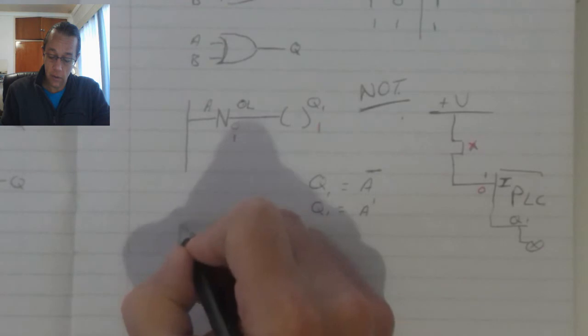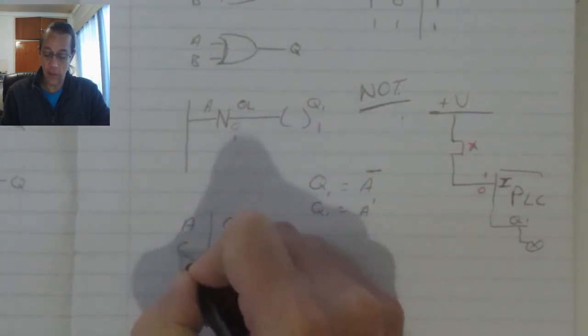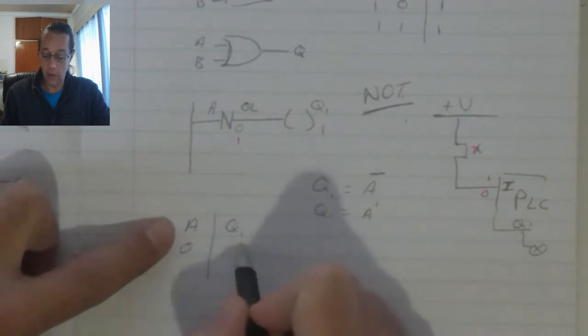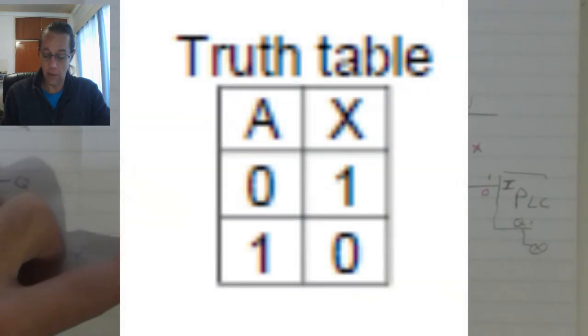A truth table, A versus Q. If A is OFF, then it reads it as an ON. And if it is ON, it reads it as an OFF. So, it switches the function.